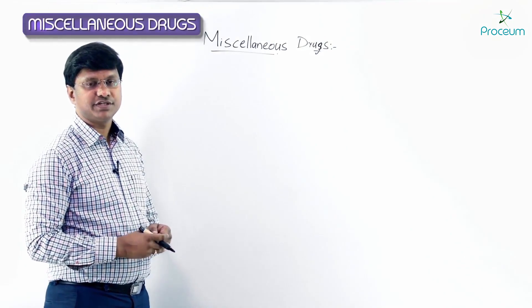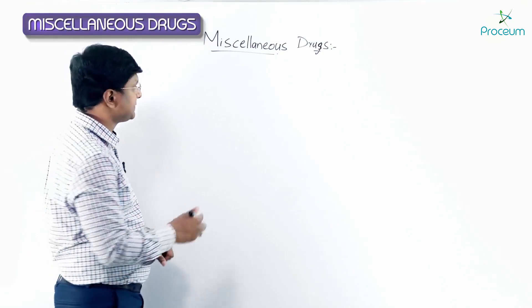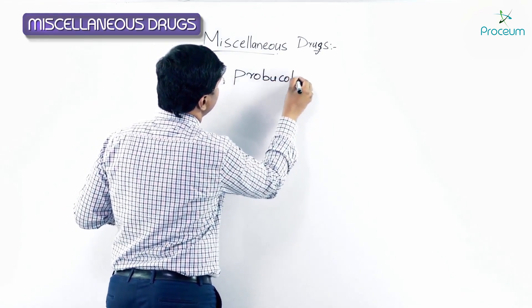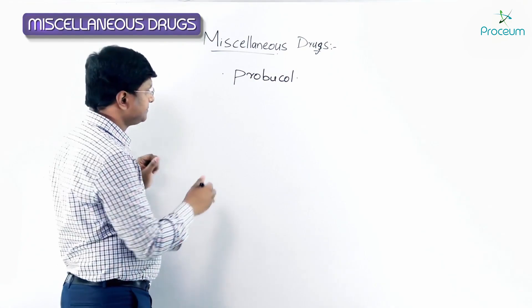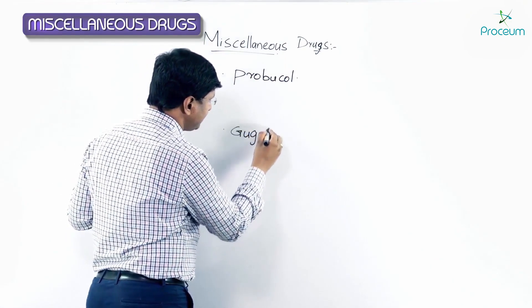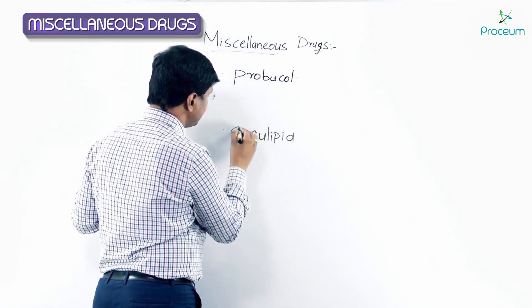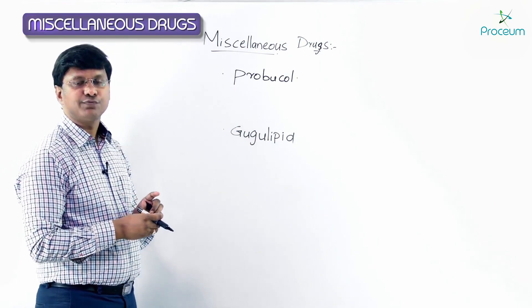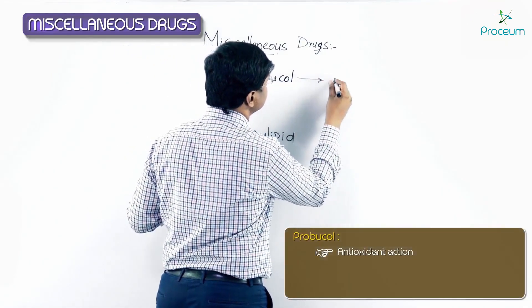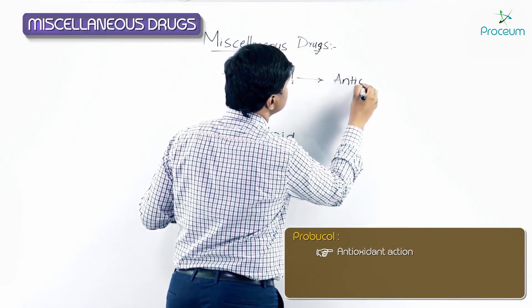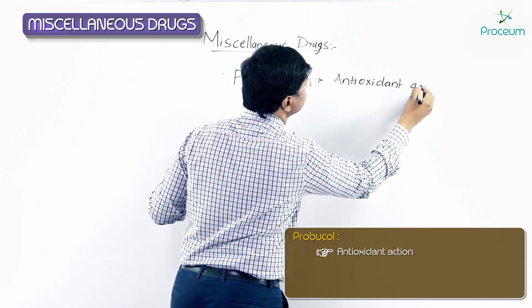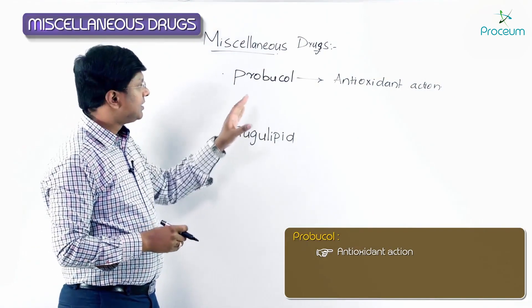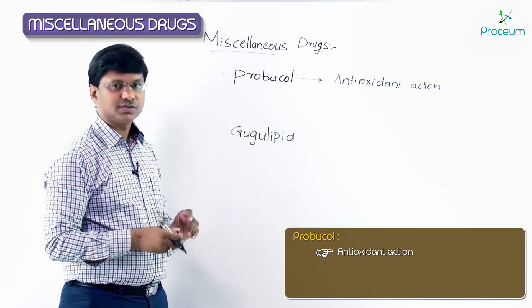Let me tell you some of the other drugs used for the treatment of dyslipidemia. We have two important drugs: probucol and gugulipid. Probucol is useful because of its antioxidant action.